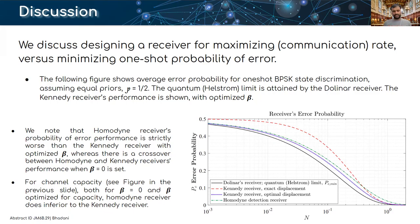For channel capacity, for the case of both zero displacement and optimized displacement for capacity, homodyne receiver is inferior to the Kennedy receiver.